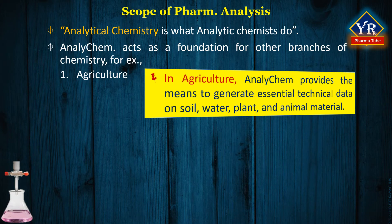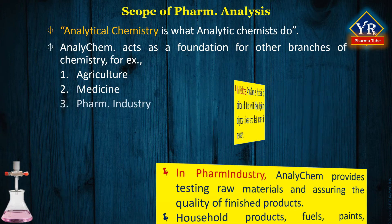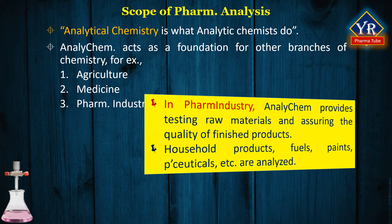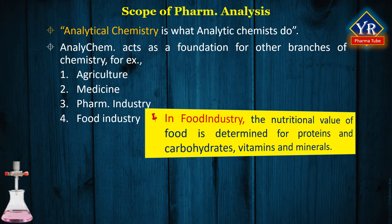In agriculture, analytical chemistry provides the means to generate essential technical data on soil, water, plant, and animal material. In medicine, analytical chemistry is the basis for clinical laboratory tests which help physicians diagnose disease and chart progress in recovery. In the pharmaceutical industry, analytical chemistry provides the means of testing raw materials and for assuring the quality of finished products whose chemical composition is critical. Many household products, fuels, paints, and pharmaceuticals are analyzed by procedures developed by analytical chemists before being sold to the consumer. In the food industry, the nutritional value of food is determined by chemical analysis for major components such as protein and carbohydrates and trace components such as vitamins and minerals.